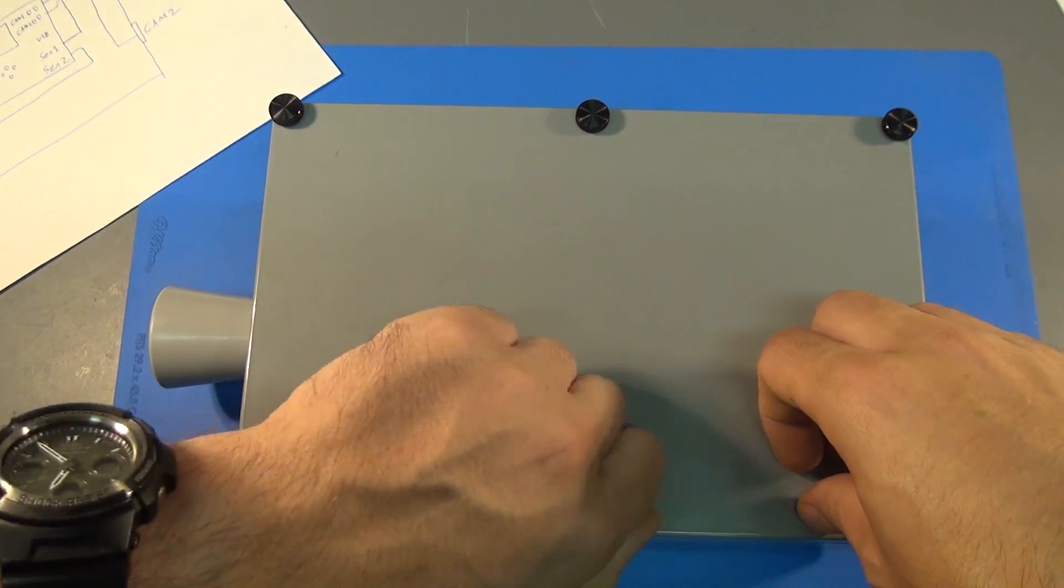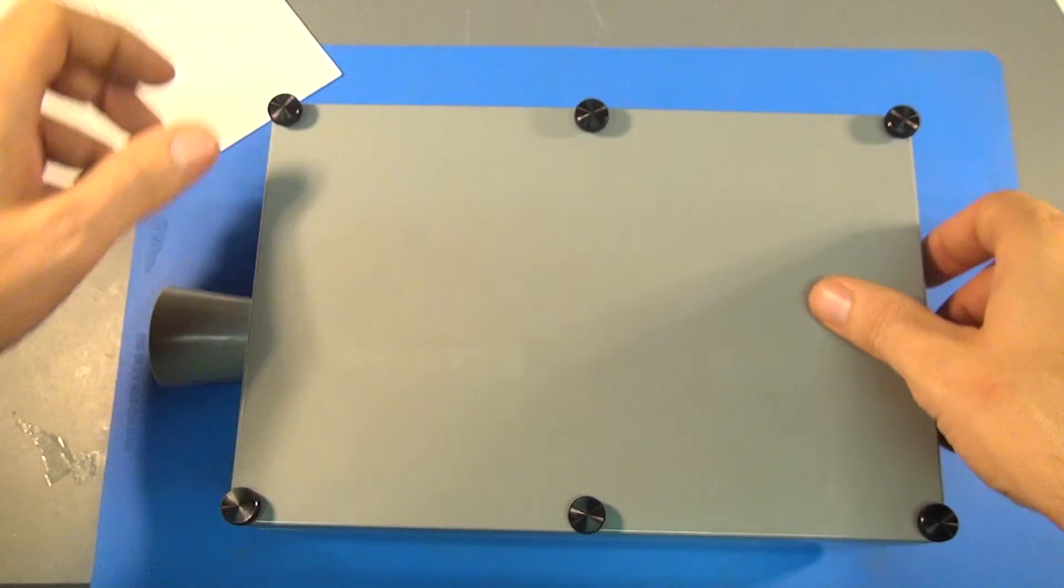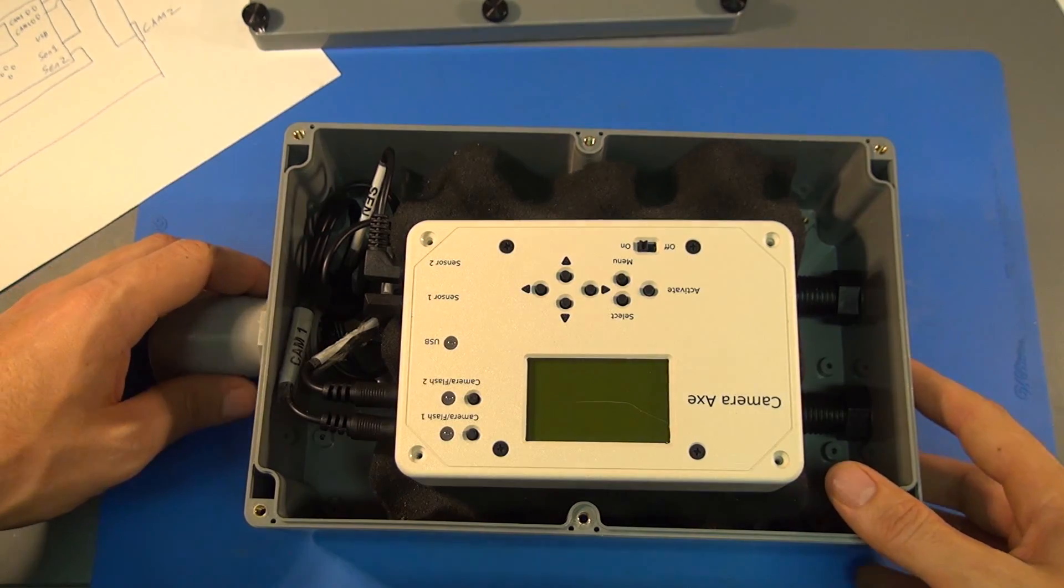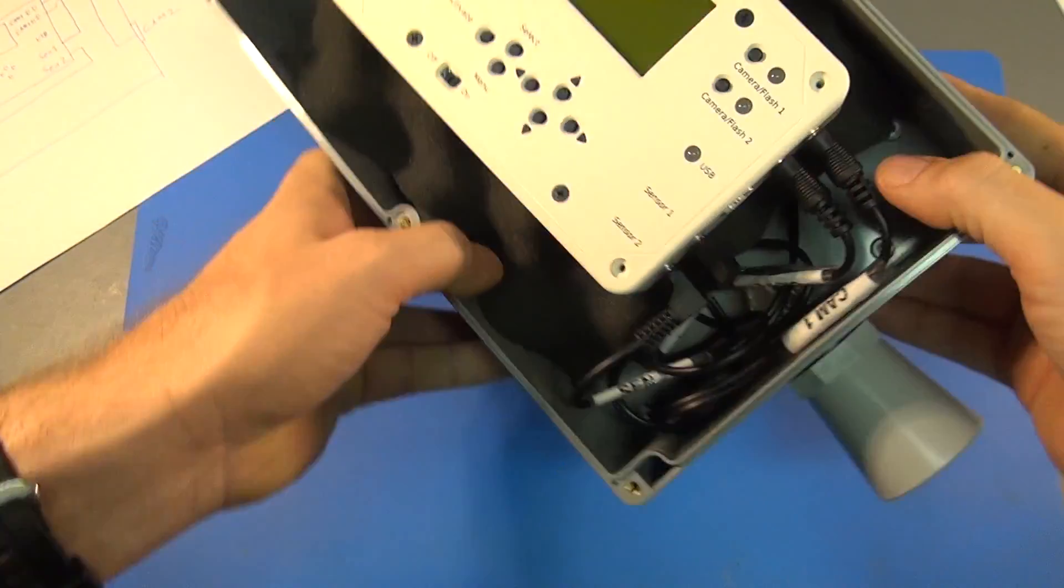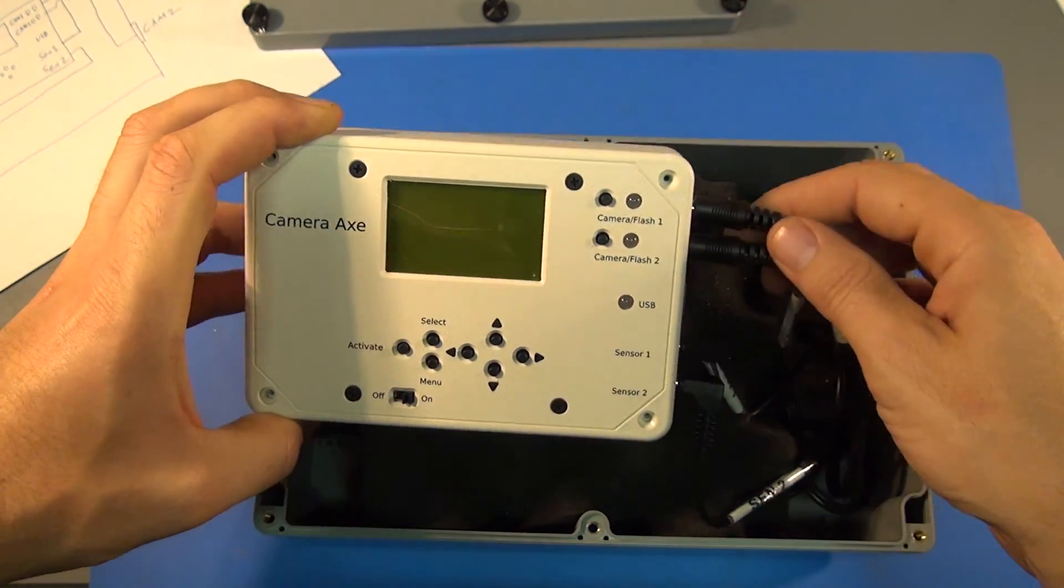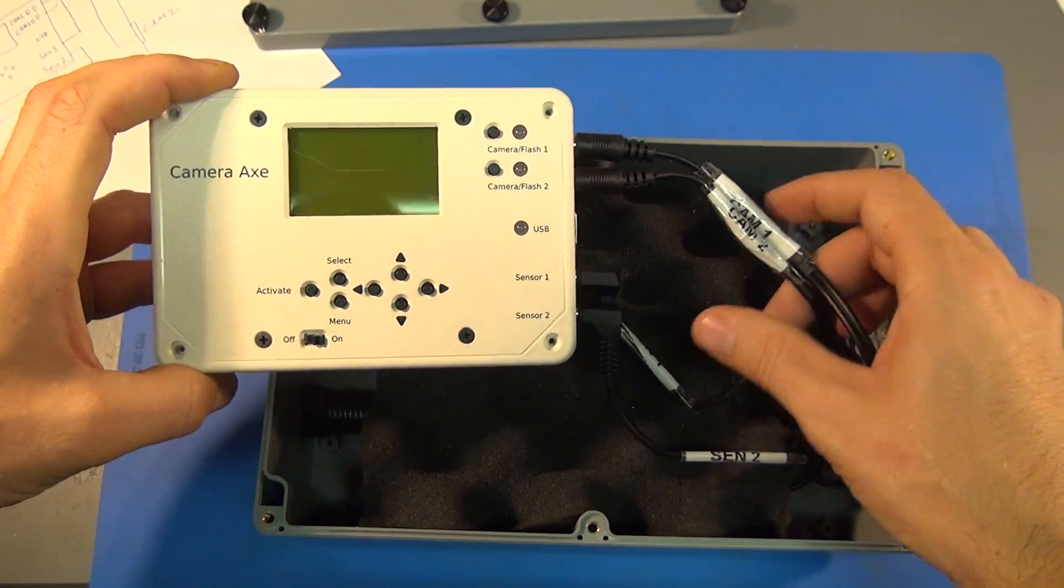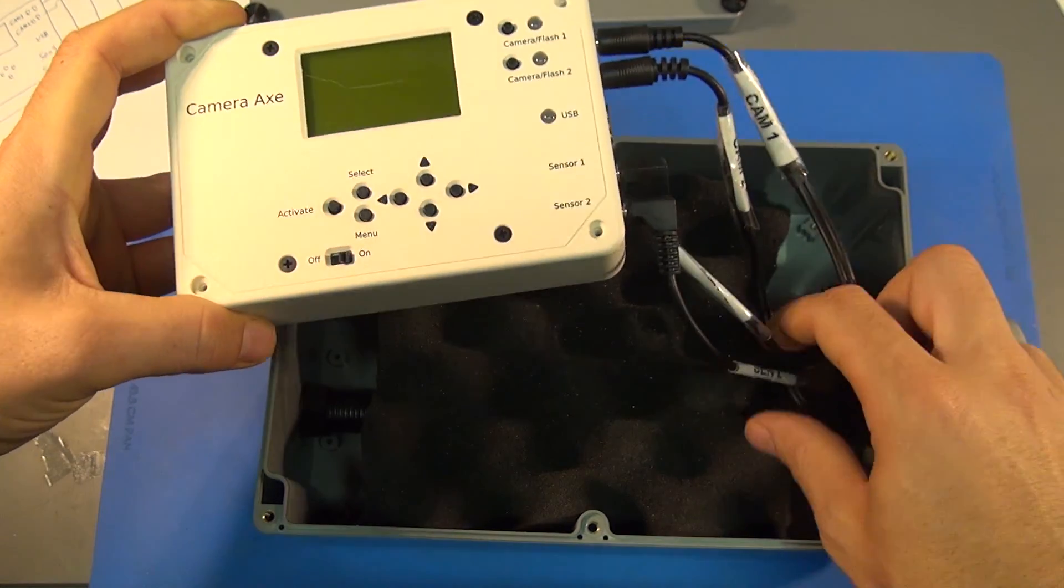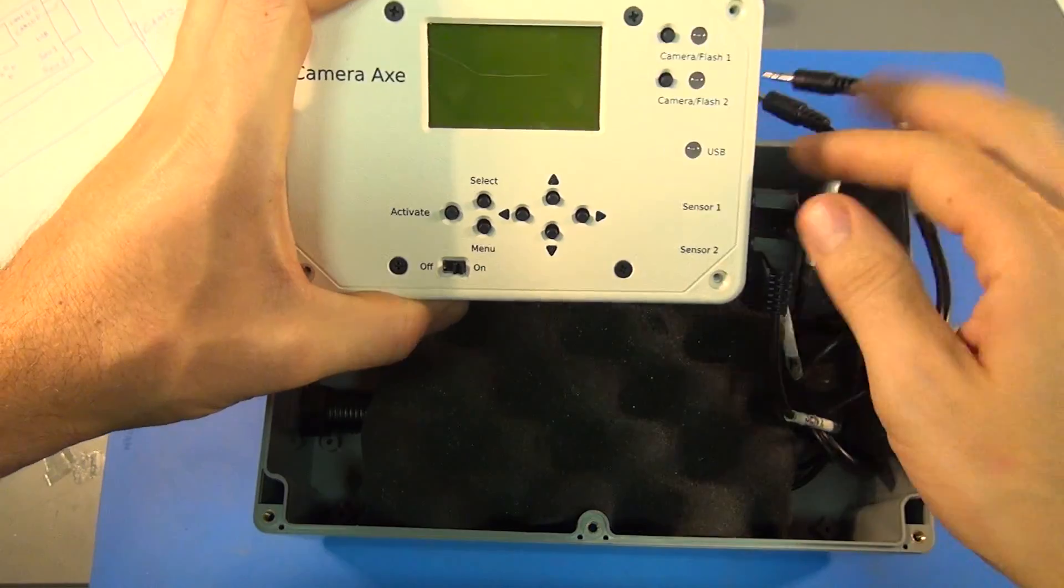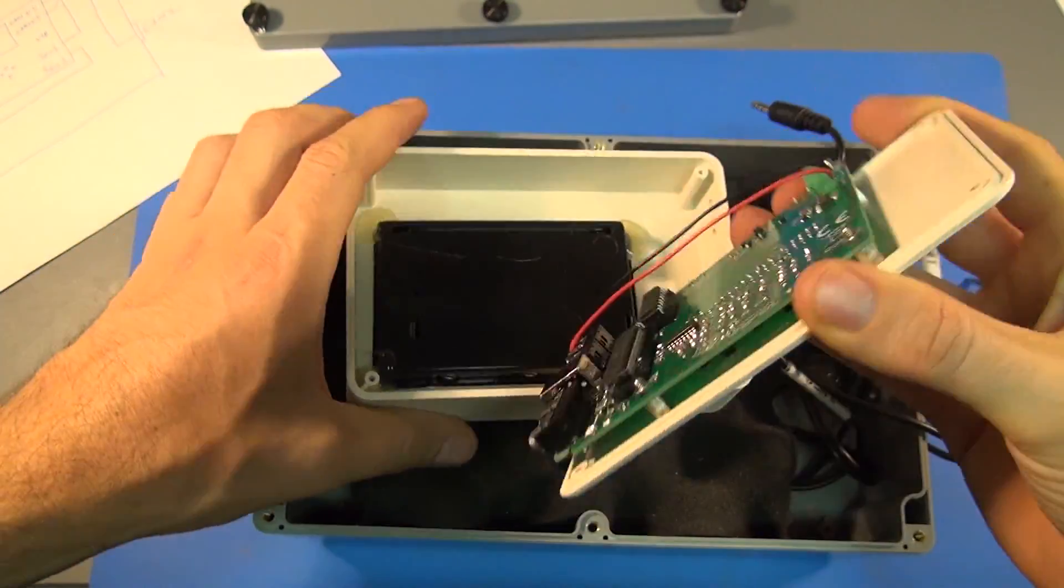I have these thumb screws on the case here. I'm just taking them off. I put these on because it makes it much easier to get the case apart. Inside the case here, what we've got is a camera axe and we've got the cables labeled here for the sensors.